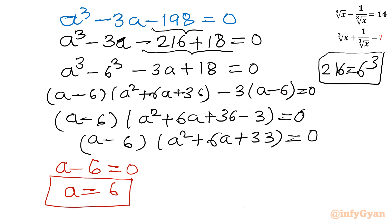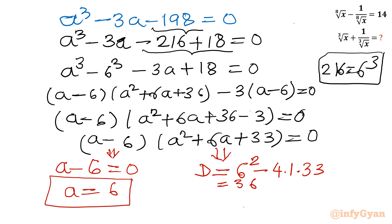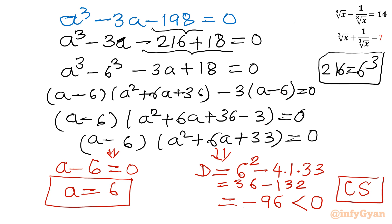From the quadratic factor a squared plus 6a plus 33 equals 0, I will check the discriminant delta. It is b squared minus 4ac, so 6 squared minus 4 times 1 times 33, which is 36 minus 132, equal to minus 96. Since the discriminant is negative, this gives complex solutions, so we reject this quadratic for real solutions. Therefore a equals 6.